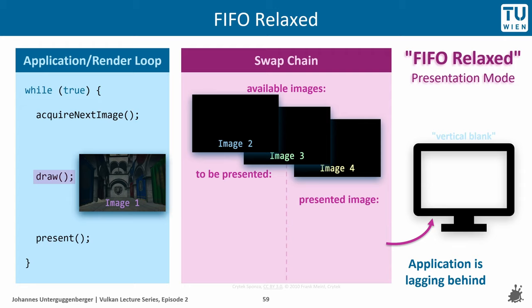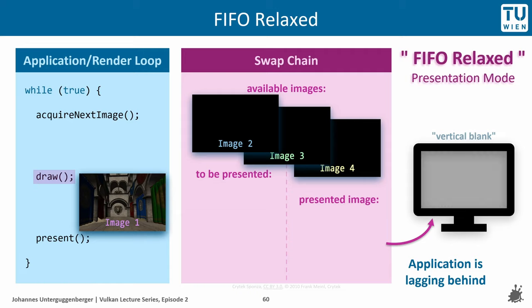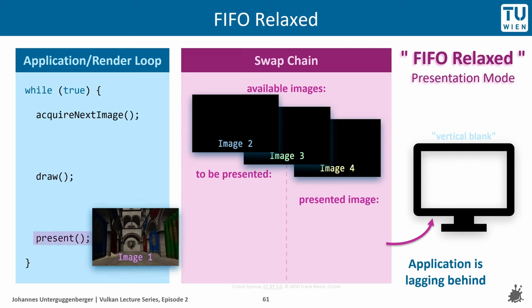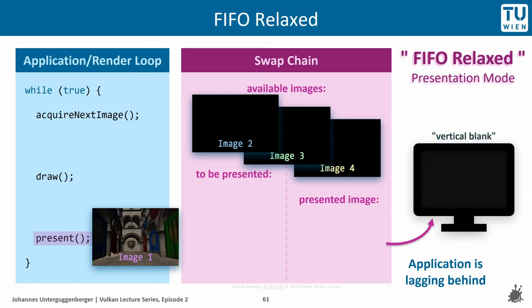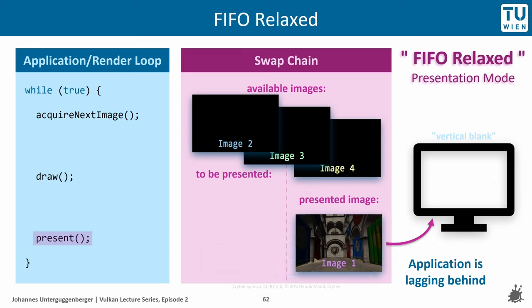This particular situation is addressed by the FIFO relaxed presentation mode. With the SwapChain configured in FIFO relaxed mode, the application renders really slowly and vertical blanks occur without a new image being handed over. When the SwapChain receives the next image and recognizes that several vertical blanks have occurred without a new image arriving in the to-be-presented queue, the incoming image can go directly into the presentation slot — without putting it in the queue and without waiting for the next vertical blank, even if data transfer starts somewhere in the middle of the image.